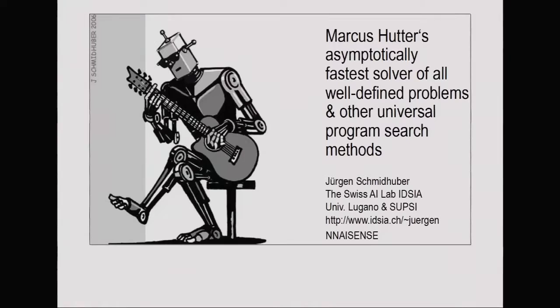I'm going to talk about Markus Hutter's asymptotically fastest solver of all well-defined problems. I think every computer scientist should know about that, and especially in recurrent network research where you are really dealing with search in program space, you should know that there is something which is optimal in a certain sense in doing that, which has very little to do with what is traditionally done in neural network research.